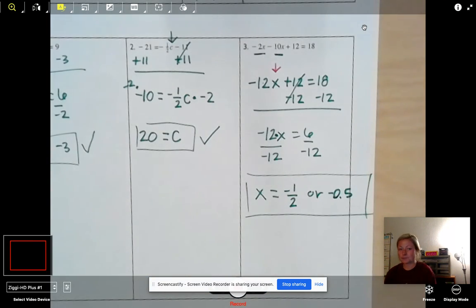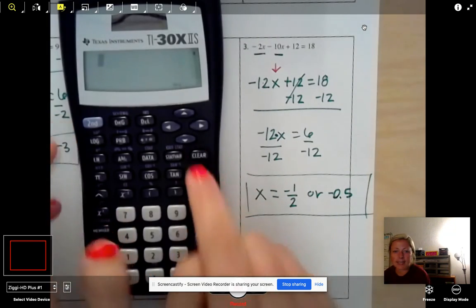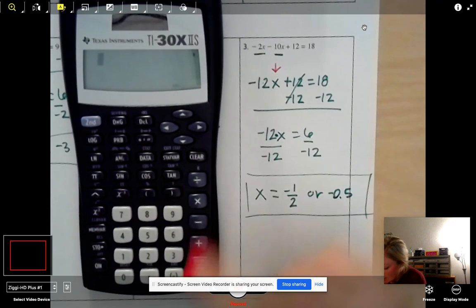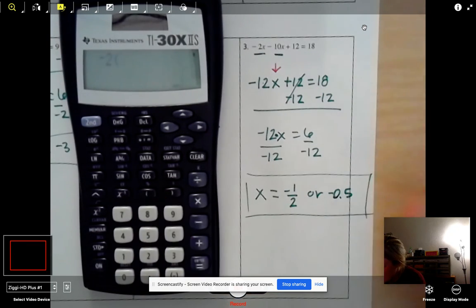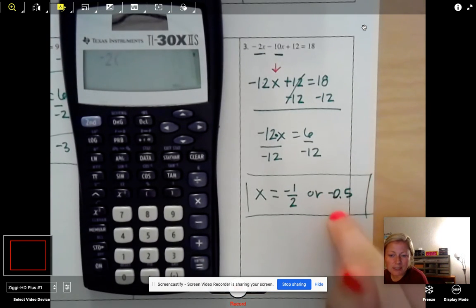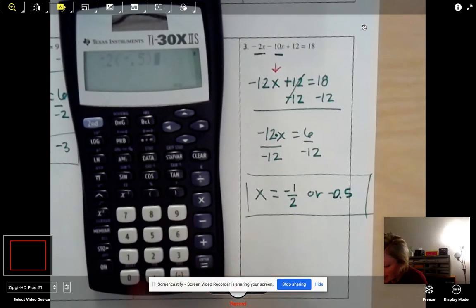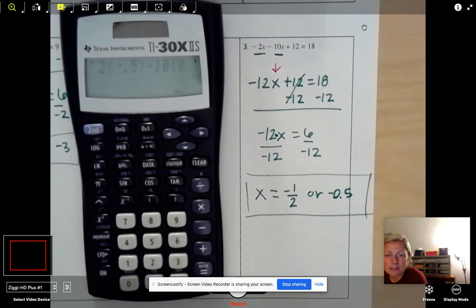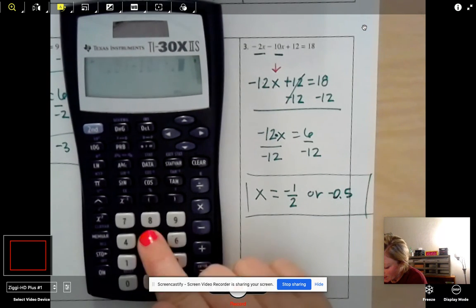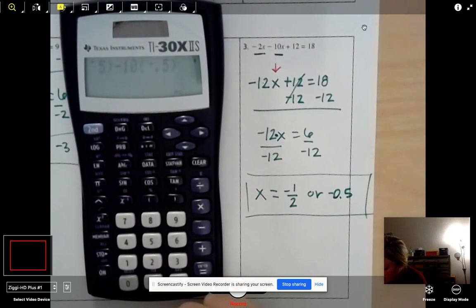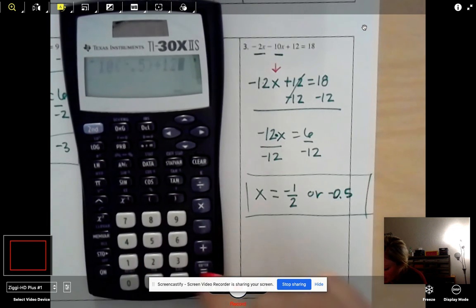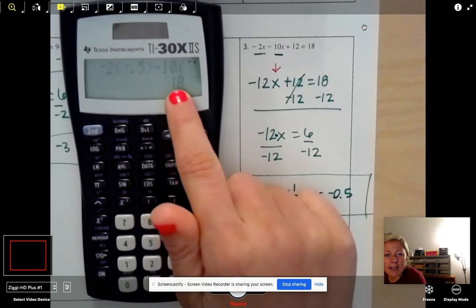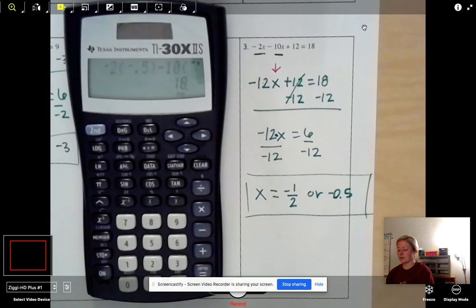And just for good measure, let's check one more time. So again, take out your handy dandy calculator. And let's see here, we have negative two parentheses. I'm going to use the decimal version because it's a little easier in a calculator. So times negative 0.5 in parentheses minus 10. Start your parentheses, negative 0.5 plus 12. I got 18. We wanted 18. All is well. We are done.